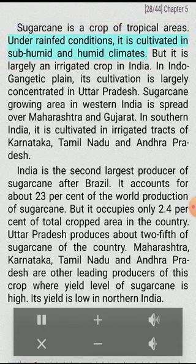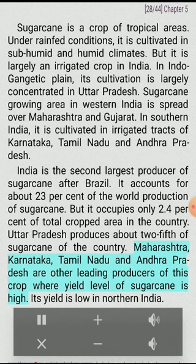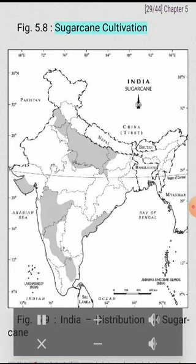Other crops: Sugarcane, tea, and coffee are other important crops grown in India. Sugarcane is a crop of tropical areas. Under rainfed conditions, it is cultivated in subhumid and humid climates, but it is largely an irrigated crop in India. In the Indo-Gangetic Plain, its cultivation is largely concentrated in Uttar Pradesh. Sugarcane-growing area in western India is spread over Maharashtra and Gujarat. In southern India, it is cultivated in irrigated tracts of Karnataka, Tamil Nadu, and Andhra Pradesh. India is the second largest producer of sugarcane after Brazil and accounts for about 23% of world production, but it occupies only 2.4% of total cropped area. Uttar Pradesh produces about two-fifths of the country's sugarcane. Maharashtra, Karnataka, Tamil Nadu, and Andhra Pradesh are other leading producers where yield level of sugarcane is high. Its yield is low in northern India.